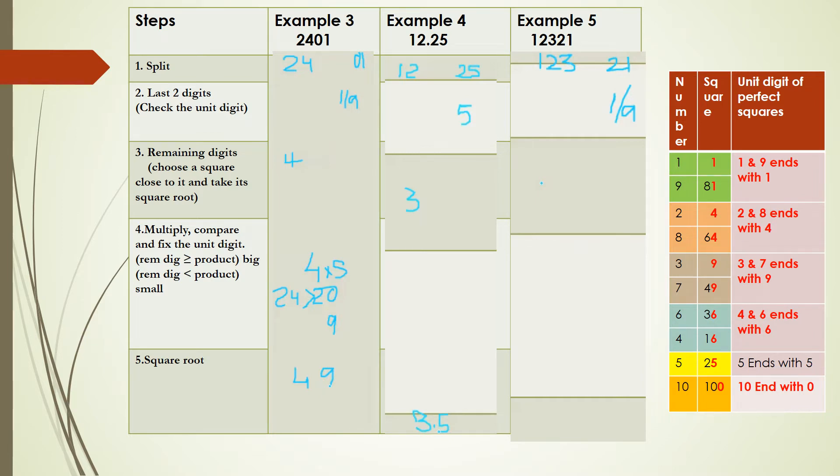So 123 is close to the square number 121, and 121 is the square of 11. Multiply 11 × 12 = 132, and compare this with 123. Since 123 is smaller than 132, you choose the smaller number, which is 1.